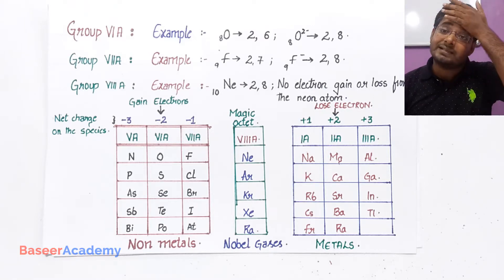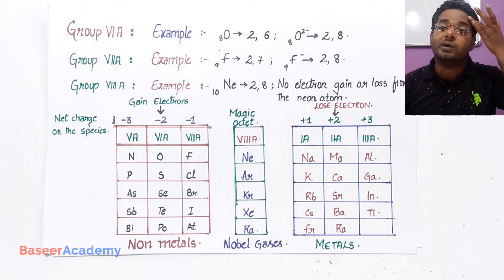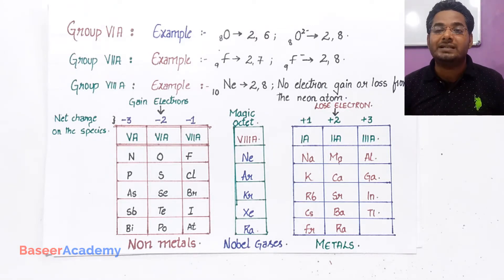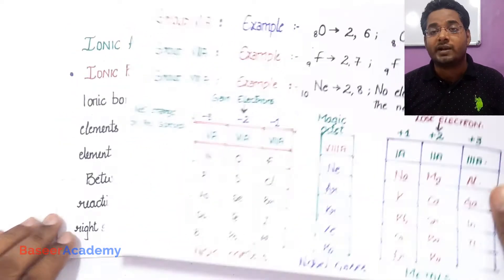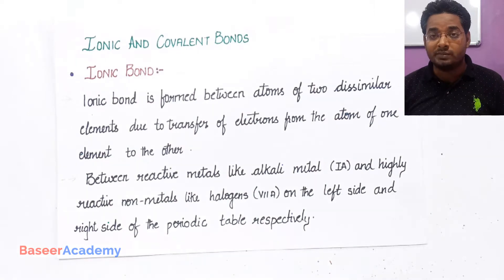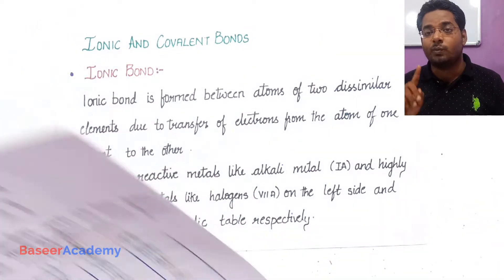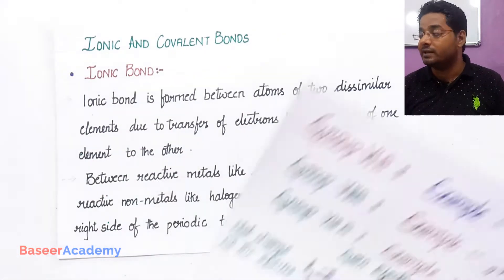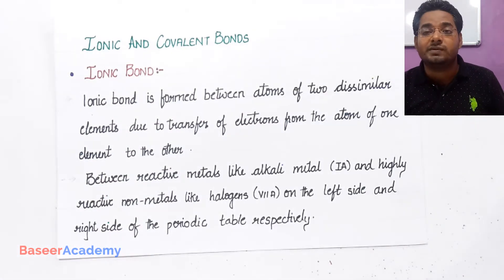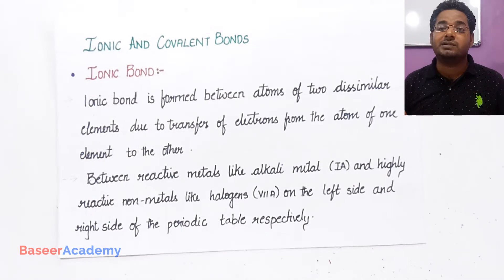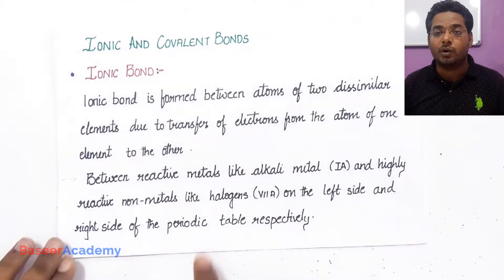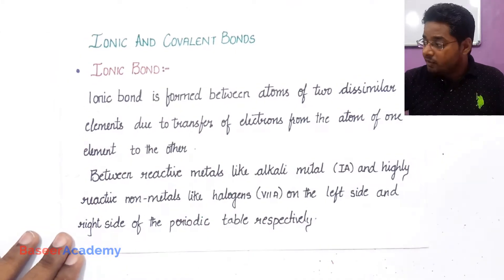That's the reason it says the ionic bond can happen only between two dissimilar atoms. Ionic bond happens by the transfer of electrons between two dissimilar atoms — from one atom to the other, the electron transfer takes place. The bond that forms due to this transfer of electrons is known as an ionic bond.